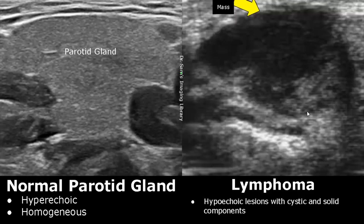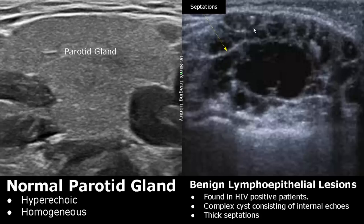Benign lymphoepithelial lesions are usually seen in HIV-positive patients. The parotid gland will contain complex cysts with thick septations and internal echoes. These bright walls within the complex cysts are the septations.